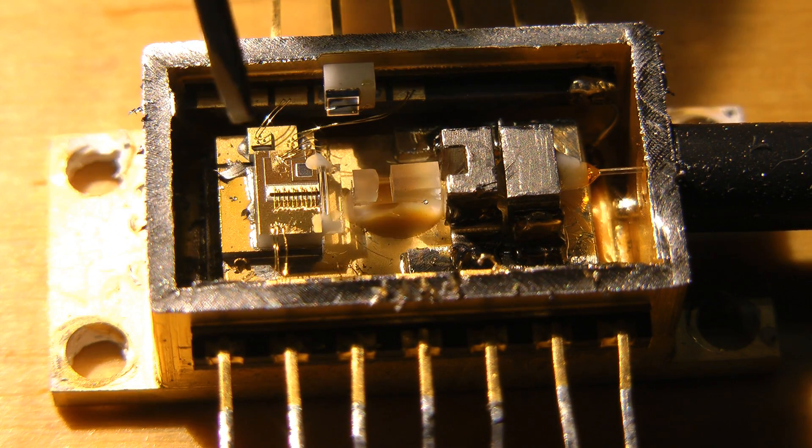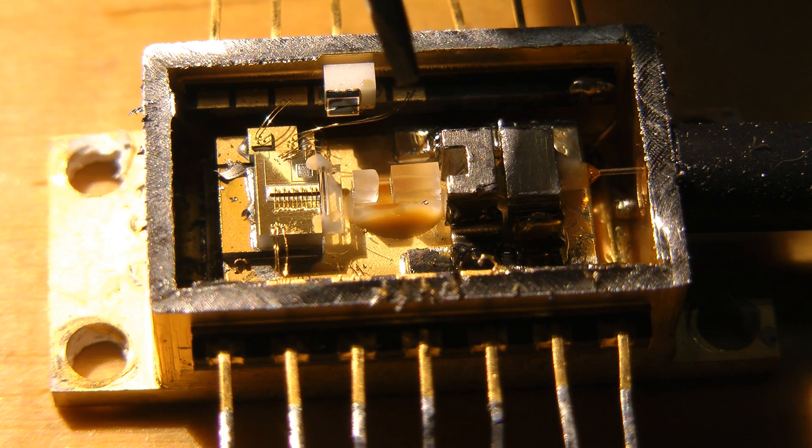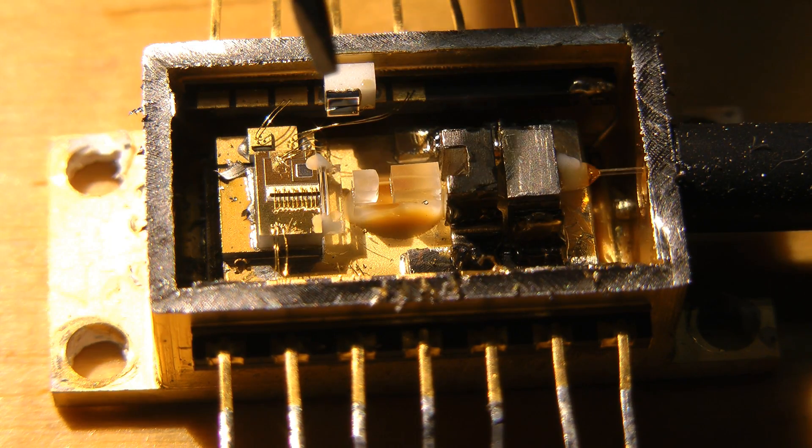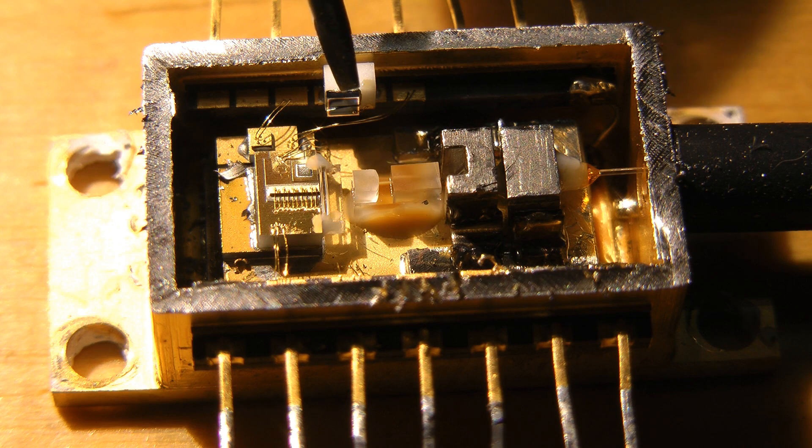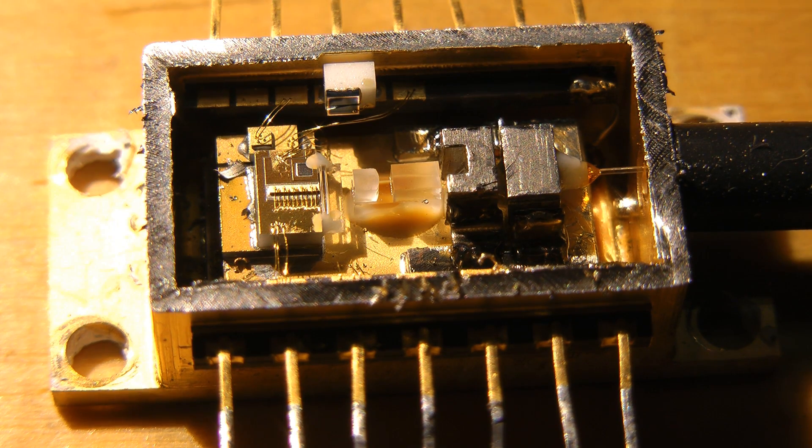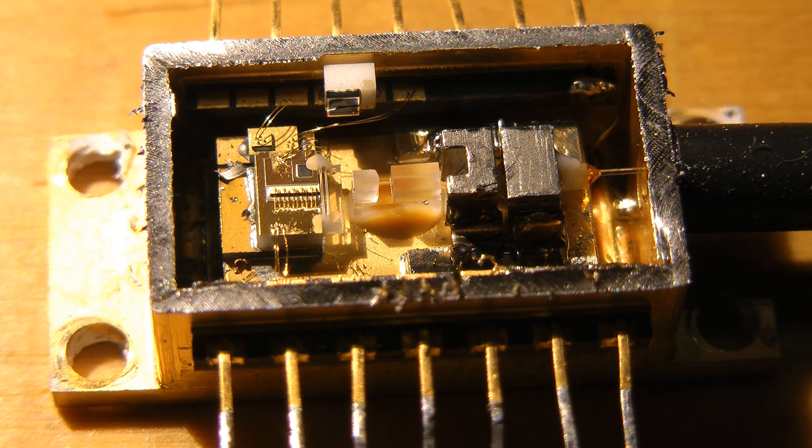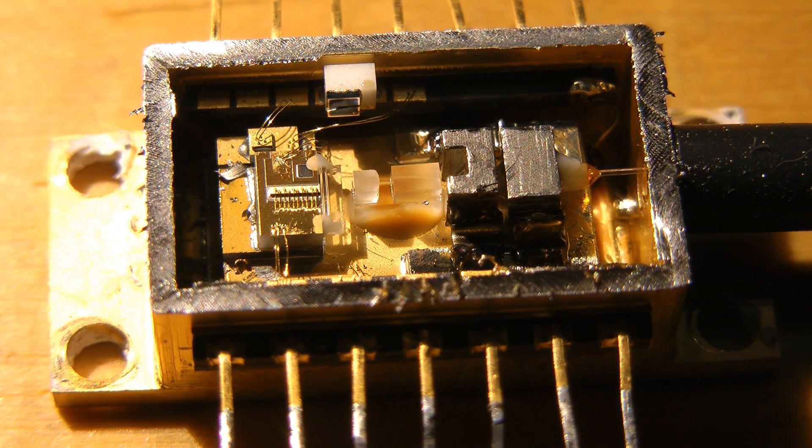There is a thermistor somewhere on this that measures the temperature of the substrate. There is a thermoelectric cooler underneath all of this. This one here is the photodiode that is used for a feedback loop to maintain constant optical output power. This photodiode just picks up stray light coming around the package, so the gain is quite variable and has to be calibrated per laser.